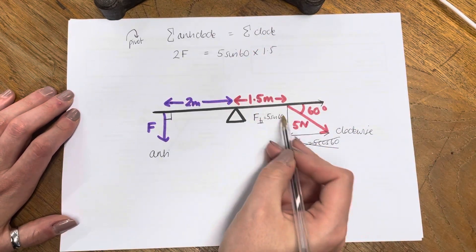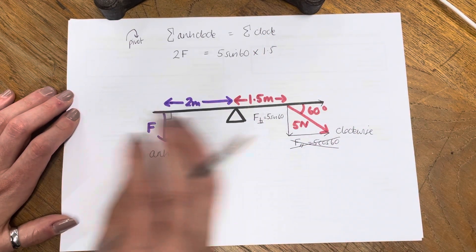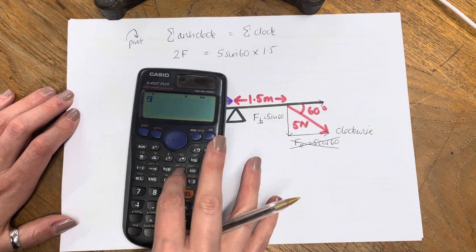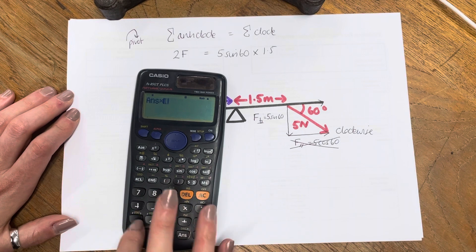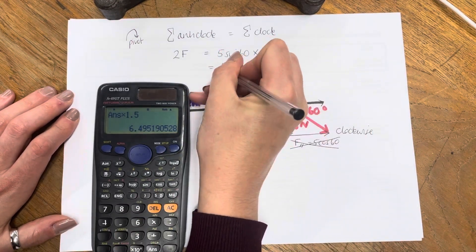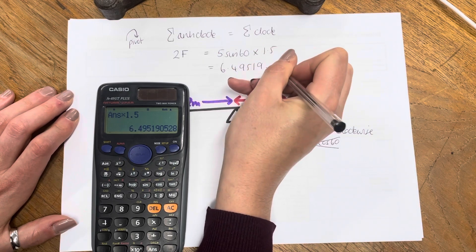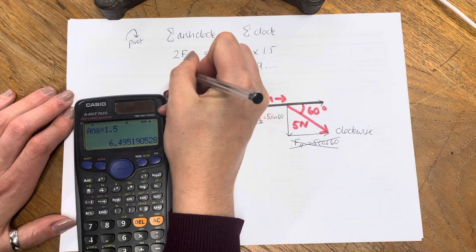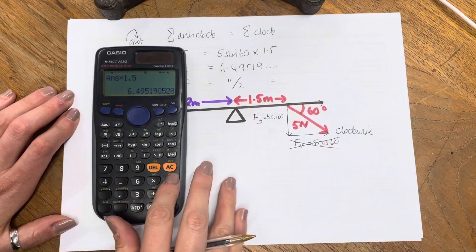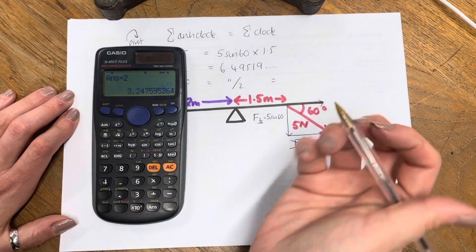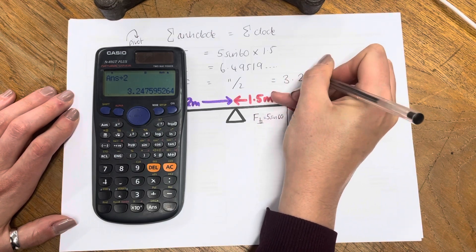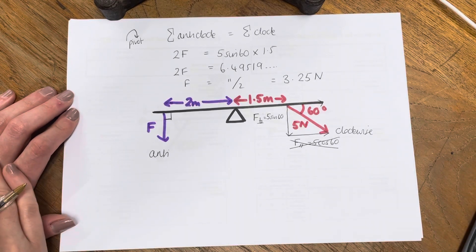Be careful — often when people do this step, they think they've done everything and forget that they still need to multiply by the distance. So putting numbers in: 5 sine 60 times 1.5 equals 6.49519, carrying on. That equals 2F. Therefore F is that divided by 2, and I get that F is 3.25 Newtons, rounded to 3 significant figures.